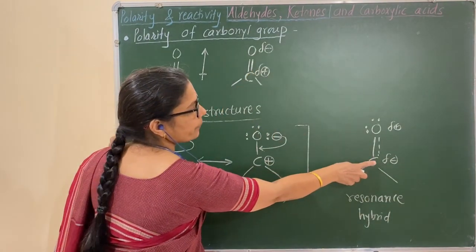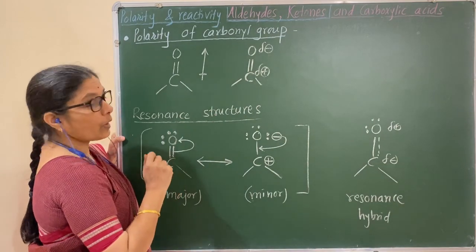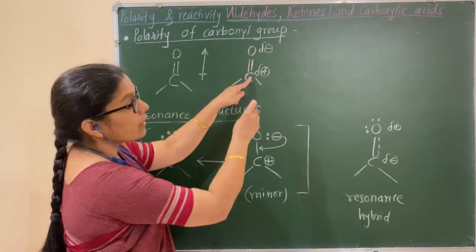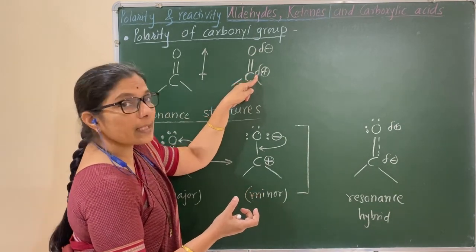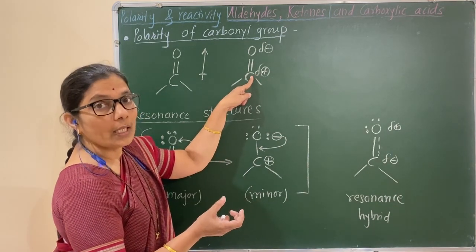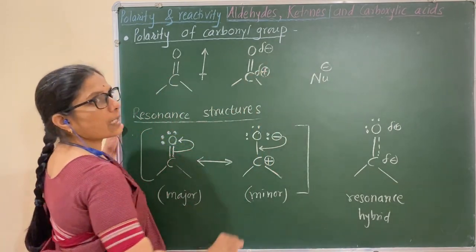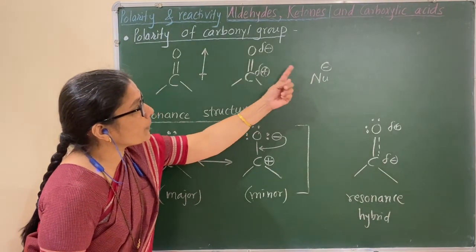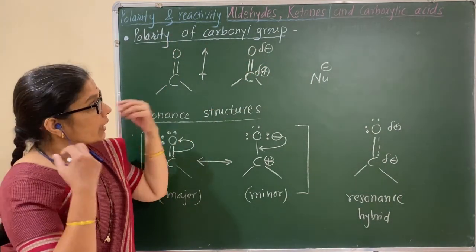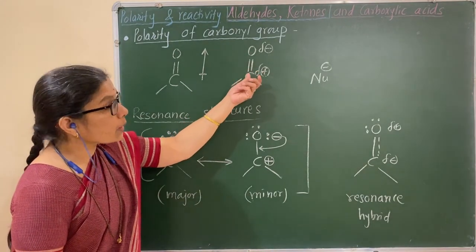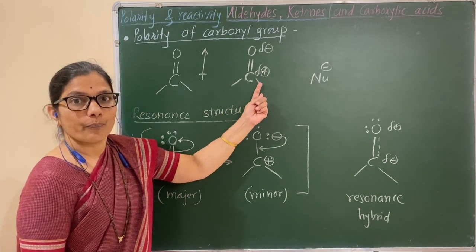Now observe these structures. This carbon has a positive polarity — it is a positive pole. It means that it is an electrophilic center, that is, an electron-deficient center. Electrophilic means electron-loving center. Therefore, attack of a nucleophile takes place at this carbon. The reactivity, that is the attack of a nucleophile, depends on the polarity of the carbonyl group. If the positive polarity, that is electrophilicity, is more, then the nucleophile attacks more easily and the reactivity will be more.